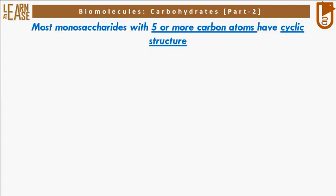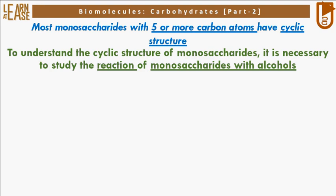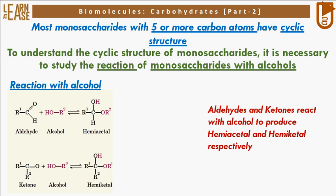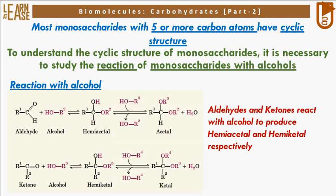Most monosaccharides with 5 or more carbon atoms have cyclic structure. To understand the cyclic structure of monosaccharides, it is necessary to study the reaction of monosaccharides with alcohols. Aldo sugars and keto sugars, when reacted with alcohol, produce molecules named hemiacetal and hemiketal respectively. These hemiacetal and hemiketal can further react with alcohol and produce acetal and ketal.